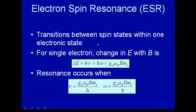For a single electron, you can calculate that the change in energy, or the splitting between spin states, is given by a g-factor times the electron Bohr magneton times the magnetic field times the magnetic quantum number M_S. This should look very familiar — it's exactly the same thing we talked about with Zeeman splitting, except now we have different numbers.